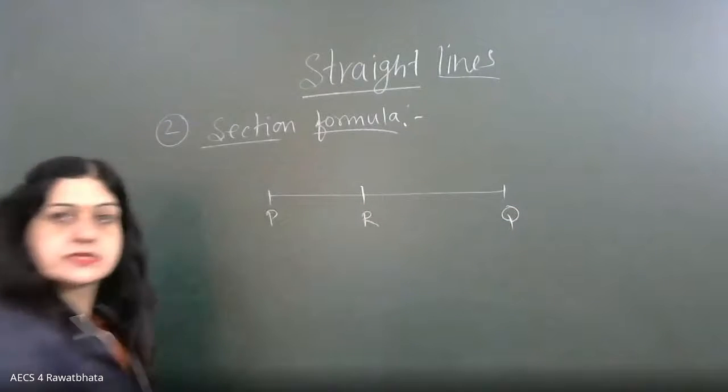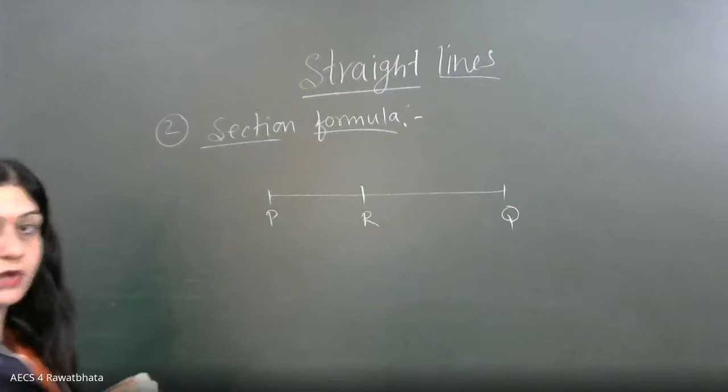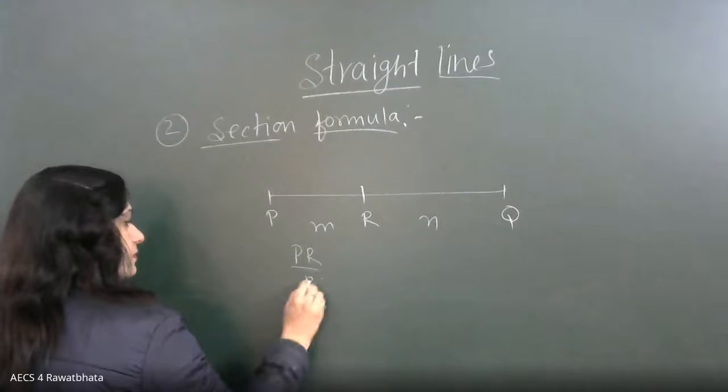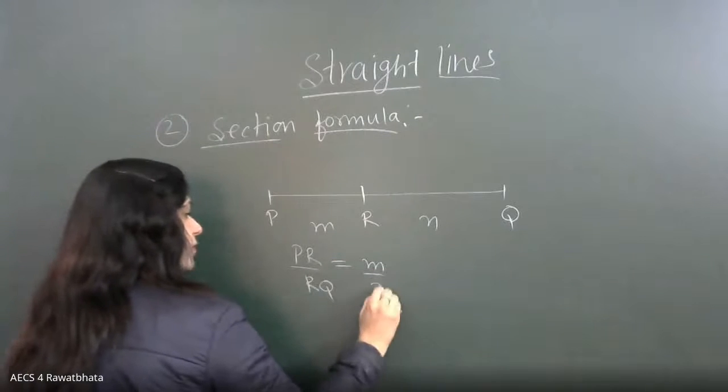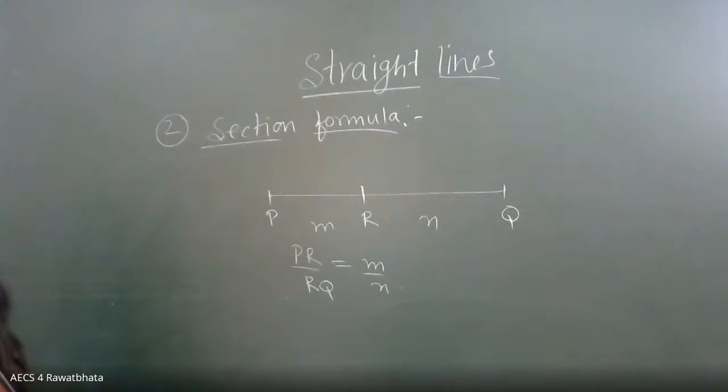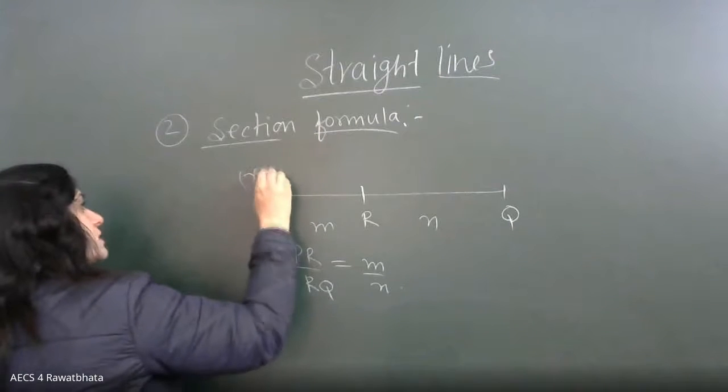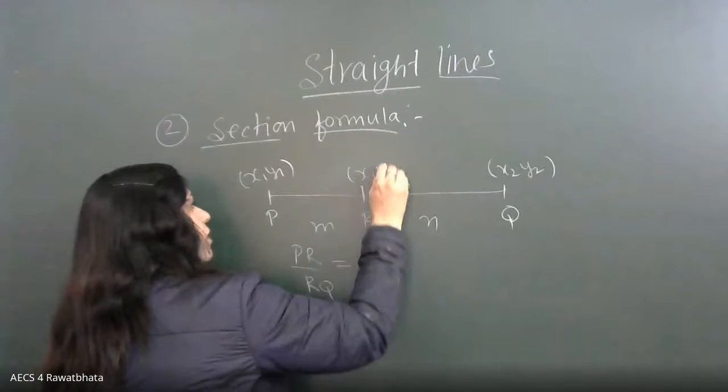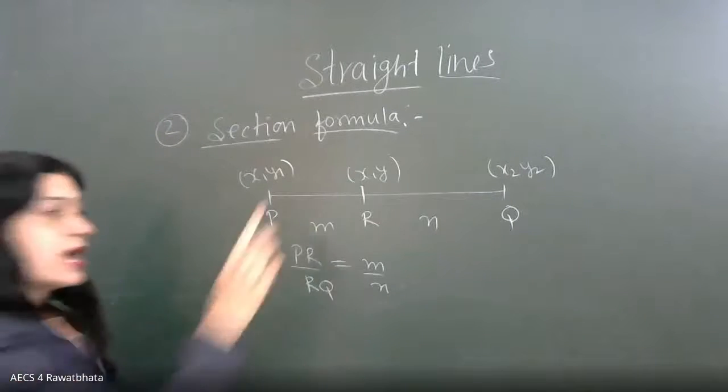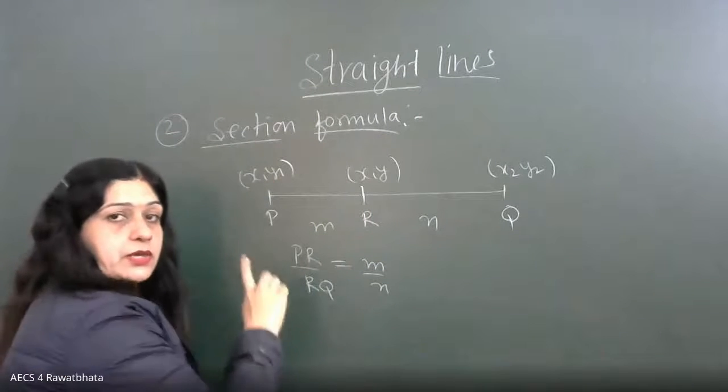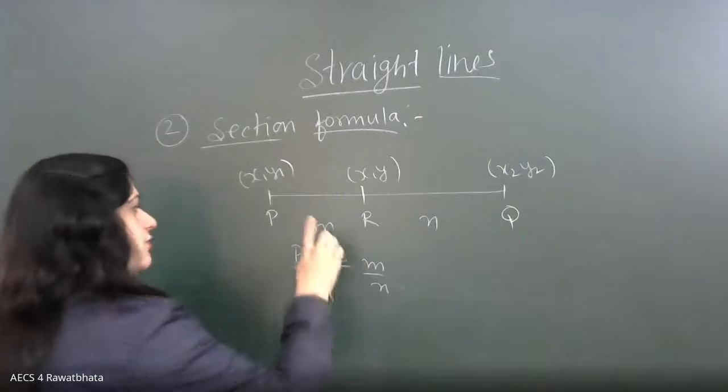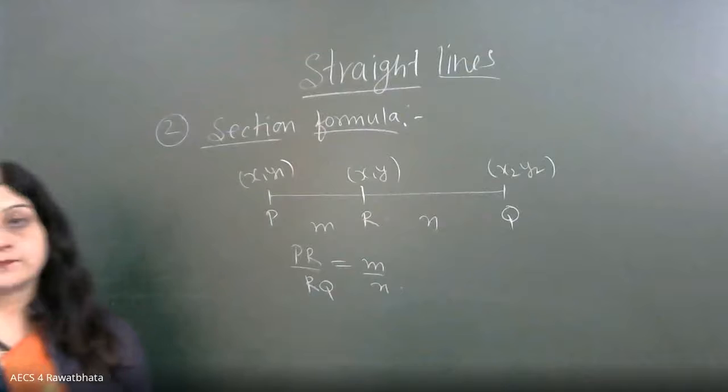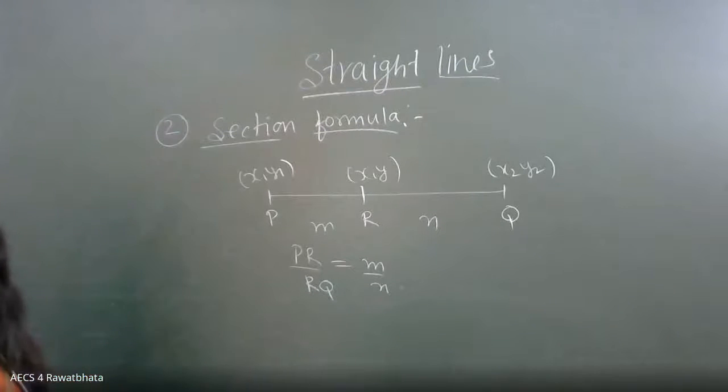R which divides a line segment PQ in the ratio of M is to N. So PR upon RQ is equal to M is to N. If the coordinates of P are X1, Y1 and Q are X2, Y2, and coordinates of point R divides line PQ in the ratio of M is to N, then we are asked to find the coordinates of this point R.